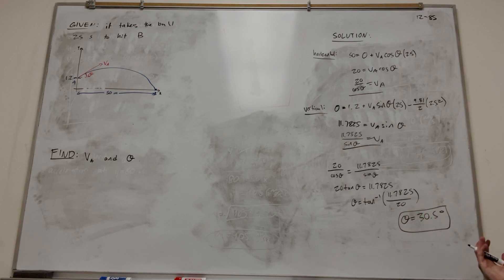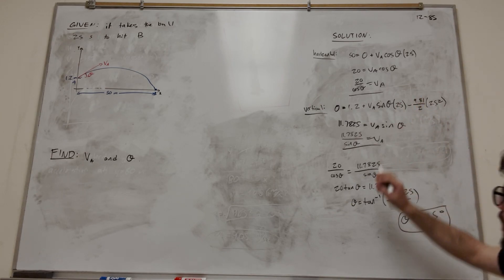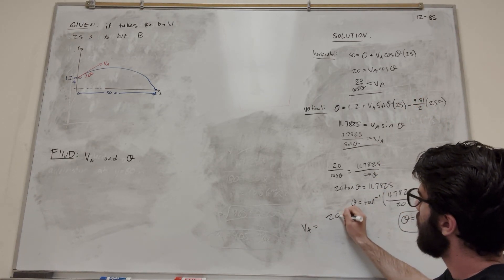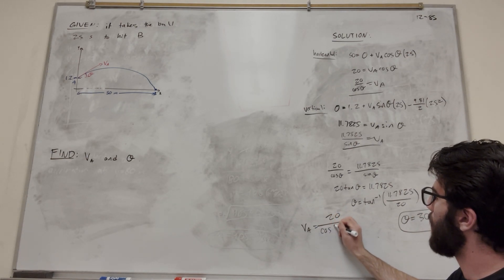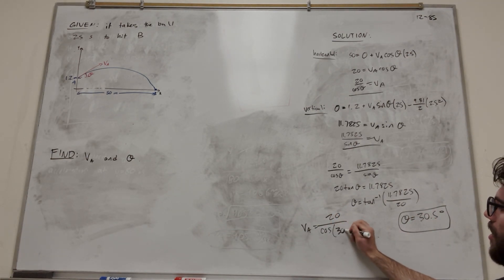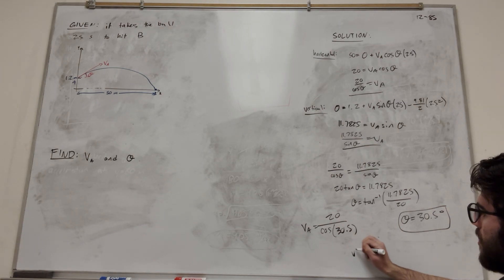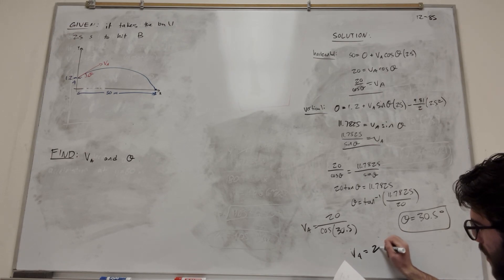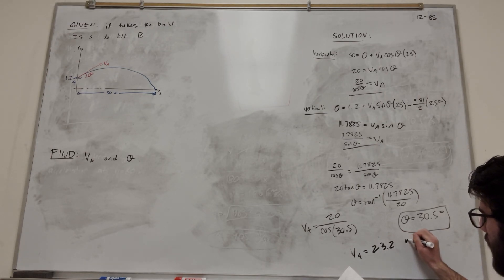All right, so we found one of our things. Now we just need to find velocity. So we can do it either way. We can plug it into this equation or this equation. How about we plug it into the top equation? So if you want to find velocity A, it's going to be equal to 20 over cosine. And now that we have theta, we can just plug it in. 30.5. That's going to give you VA is equal to 23.2 meters a second.